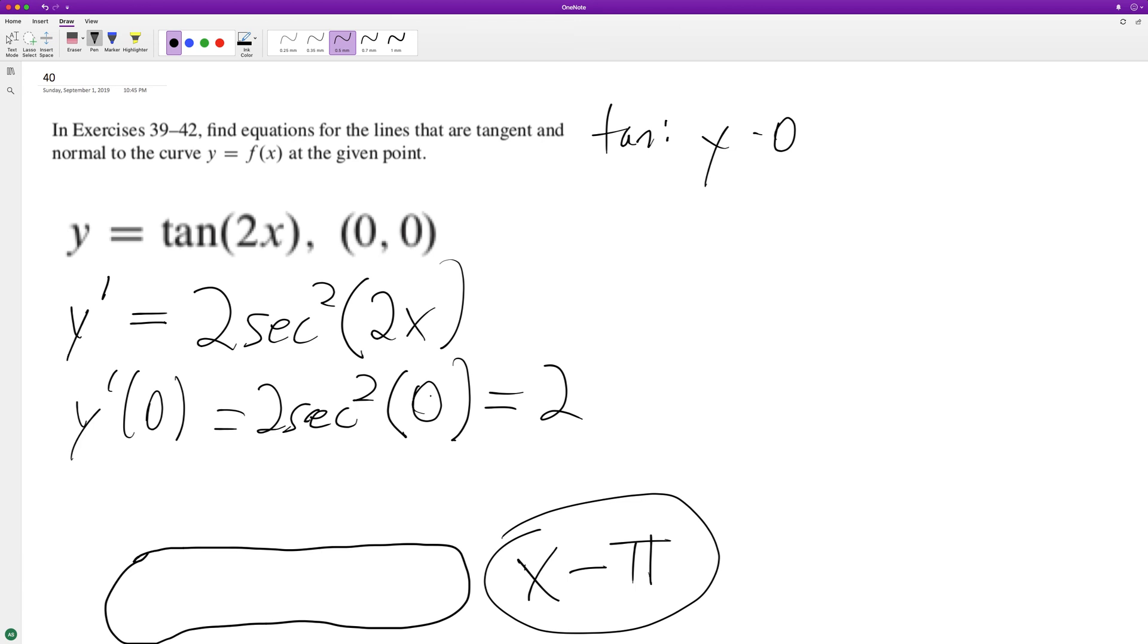minus zero equals 2 times x minus zero. This is point-slope form. So we just end up with y equals 2x. And then the normal line...